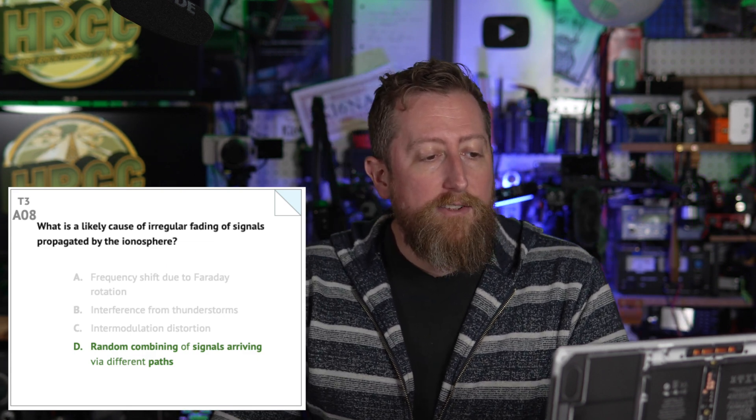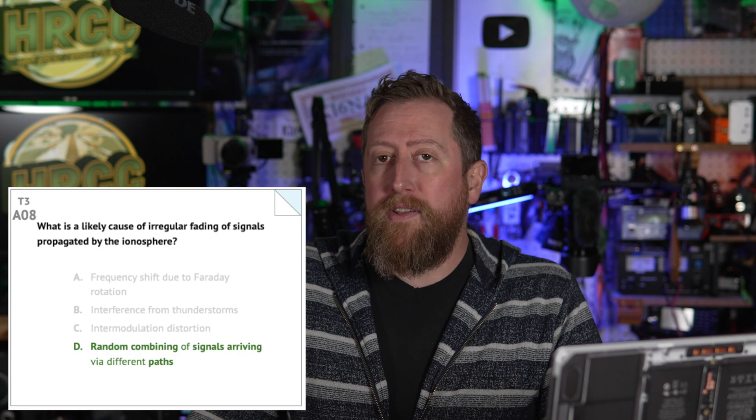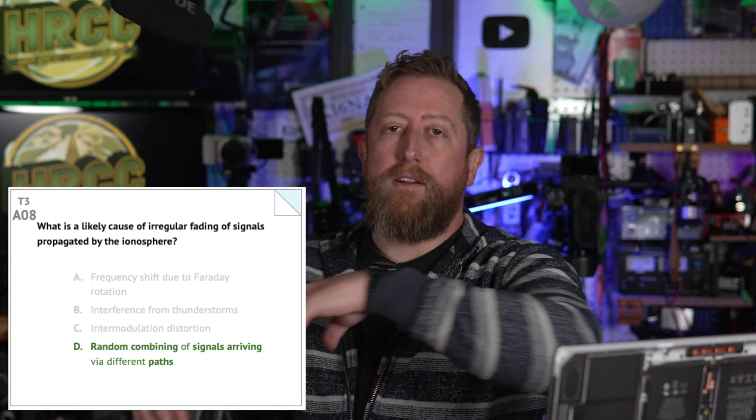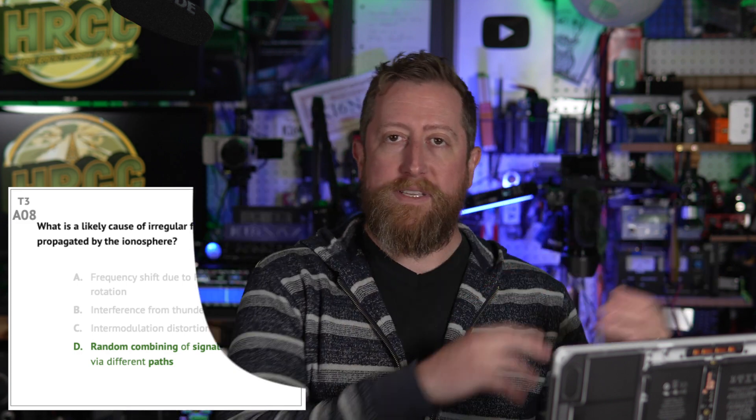Alpha 07: What weather condition might decrease range at microwave frequencies — on the high end of UHF into the gigahertz range? That's C: precipitation. Rain will cause degradation of microwave signals. Alpha 08: What is a likely cause of irregular fading of signals propagated by the ionosphere? D: random combining of signals arriving via different paths. As signals go through the ionosphere and bounce around, the different paths and takeoff angles can affect how they'll be heard at the receiving station.